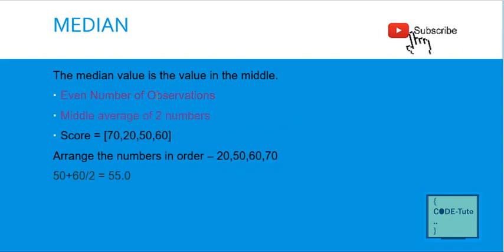For an even number of observations — for example four numbers: 20, 70, 50, 60 — first arrange them in order: 20, 50, 60, 70. Then take the two middle numbers and calculate their average: (50 + 60) / 2 = 55. So the median for these numbers is 55.